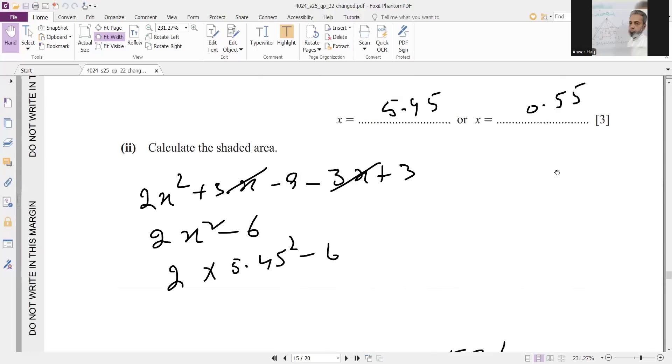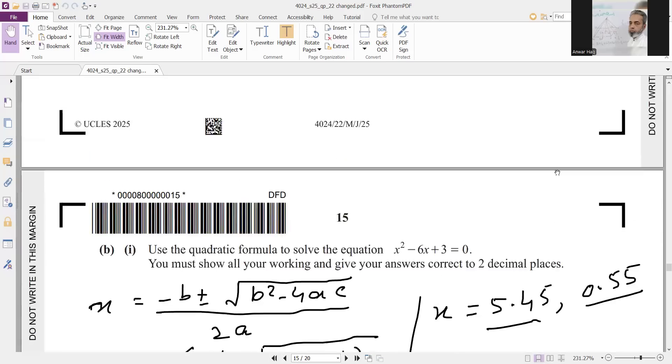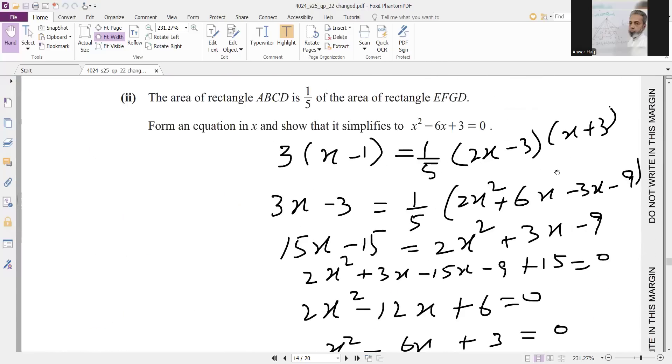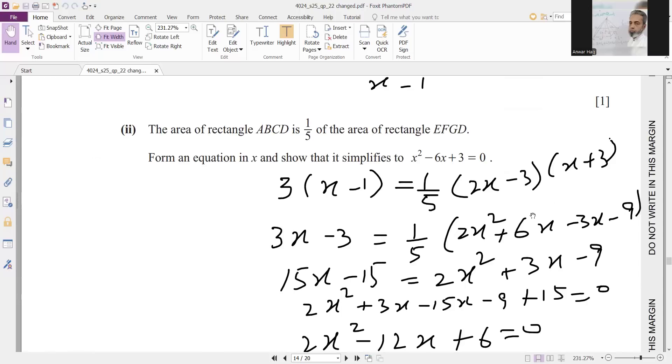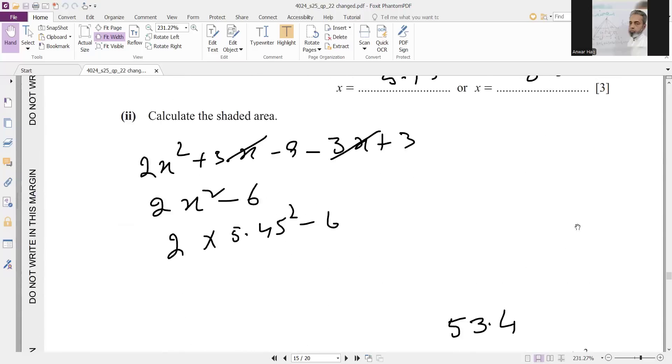After, calculate the shaded area. Shaded area is the difference of the area of big rectangle. Area of big rectangle is 2x minus 3 into x plus 3. So when you will simplify this, you will get 2x square plus 3x minus 9 minus 3x minus 3. So your answer will be 2x square minus 6. Using the value 5.45, because 0.55 is the very smallest value, you will get area of the shaded region.